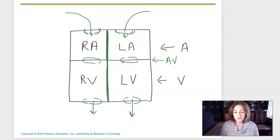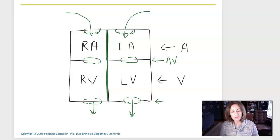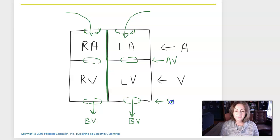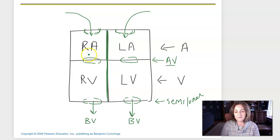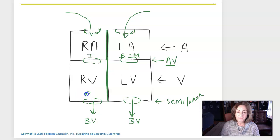There's another set of valves that control blood movement between the ventricle and a blood vessel — when blood is ejected from the heart into a blood vessel. Those are called the semilunar valves. Each valve has an individual name. The AV valve on the right is called the tricuspid valve; the AV valve on the left is called the bicuspid valve, also known as the mitral valve. The semilunar valve on the right is the pulmonary semilunar valve; on the left, it's the aortic semilunar valve.